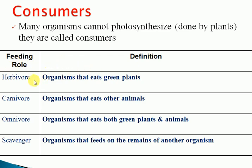There are four types of consumers. The first is herbivores — organisms that eat green plants. The second is carnivores — organisms that eat only meat, eating other animals. The third is omnivores — organisms that eat both green plants and animals, eating vegetables and non-vegetables. Humans, for example, eat vegetables and fish.